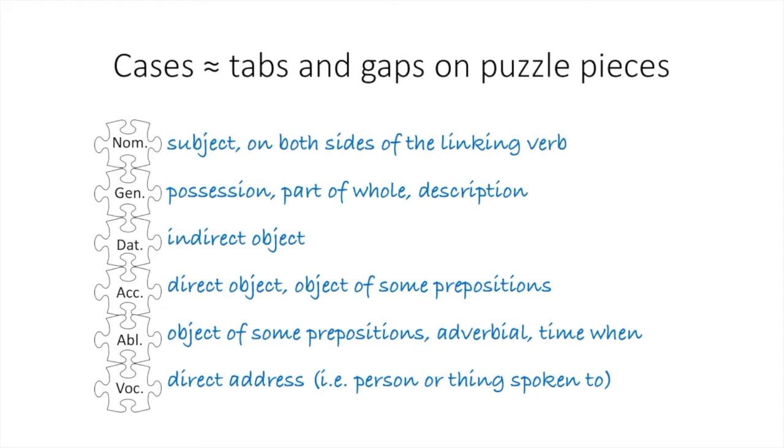Finally, a vocative noun is the person or thing spoken to. The cases are like the tabs and gaps in puzzle pieces. As you connect pieces together and see how words relate to each other, the larger picture becomes clearer.